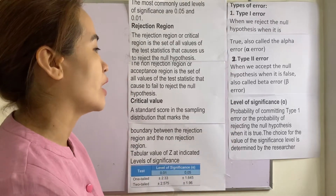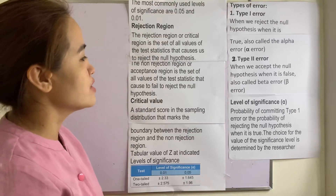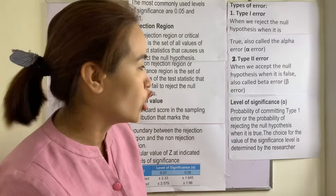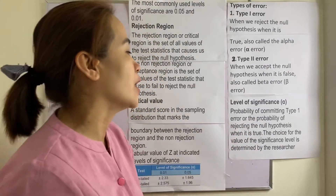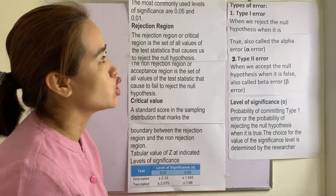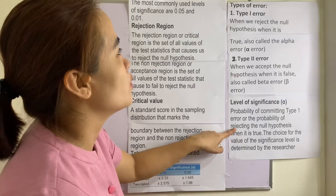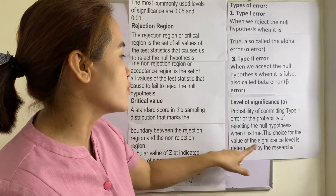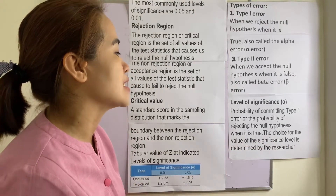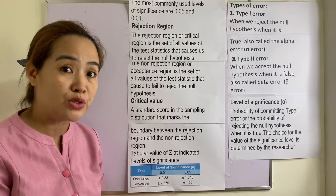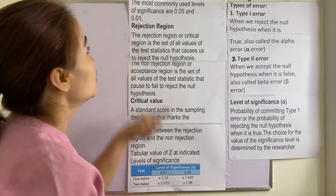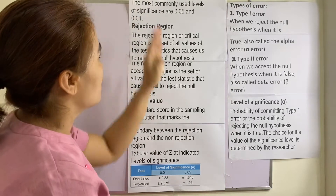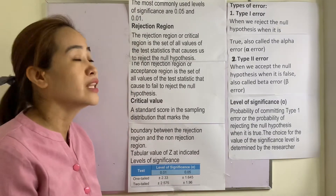What is the level of significance? The level of significance is the probability of committing a Type 1 error, or the probability of rejecting the null hypothesis when it is true. The choice of the significance level is determined by the researcher. You may choose 0.05 or 0.01, as these are the most commonly used levels of significance.